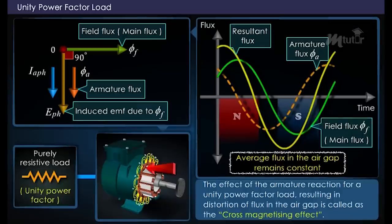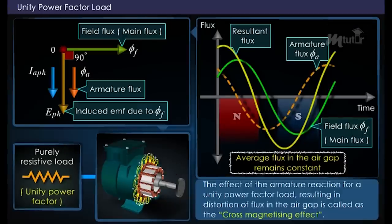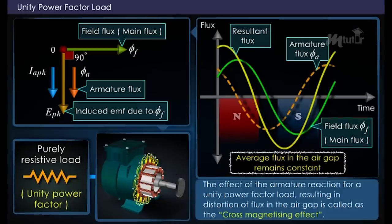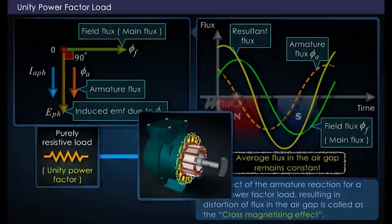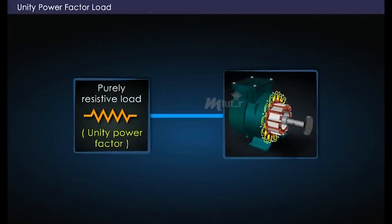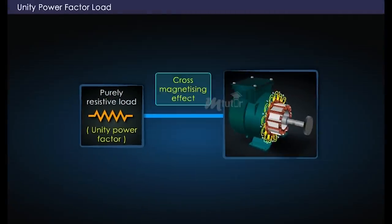This effect of the armature reaction for a unity power factor load, resulting in distortion of flux in the air gap, is called the cross-magnetizing effect. Hence, unity power factor loads cause the cross-magnetizing effect of armature reaction in the alternator.